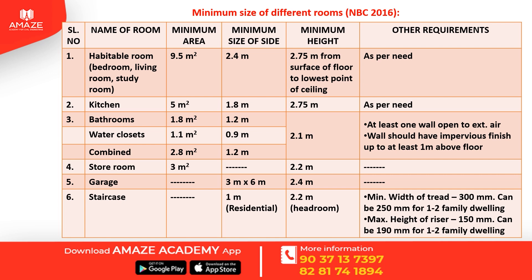For a water closet: minimum area is 1.1 square meters, minimum width is 0.9 meters, and minimum height is the same as for bathrooms. For a combined bath and WC: minimum area is 2.8 square meters, minimum width is 1.2 meters, and minimum height is 2.1 meters. At least one wall should be open to external air, and at least one meter above the floor should have an impervious finish.